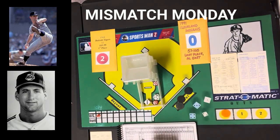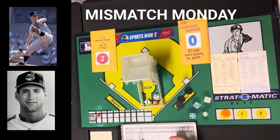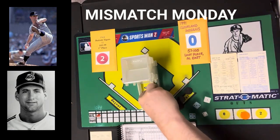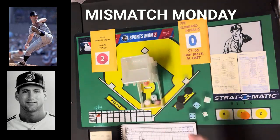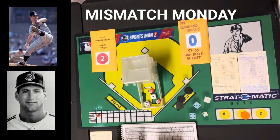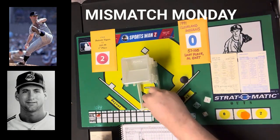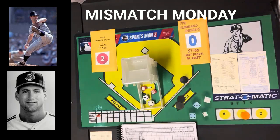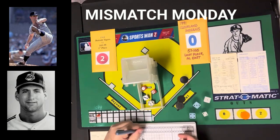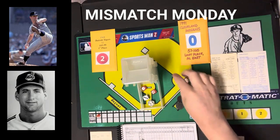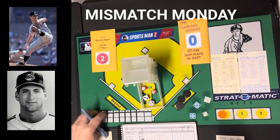Alex Cole leads off with a ground ball to the shortstop — one down. Felix Fermin gets a 1-6, a single — on base. Carlos Baerga gets a 3-10, a ground ball double play to the pitcher — 1-4-3. No runs come in for the Indians. We go to the top of the second.